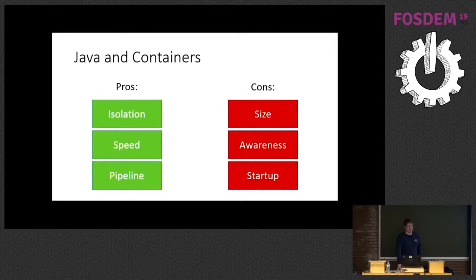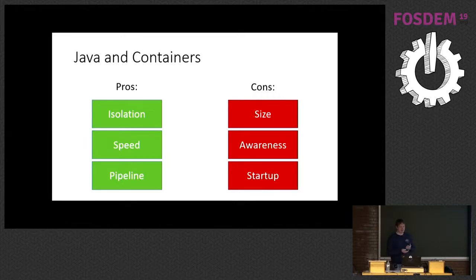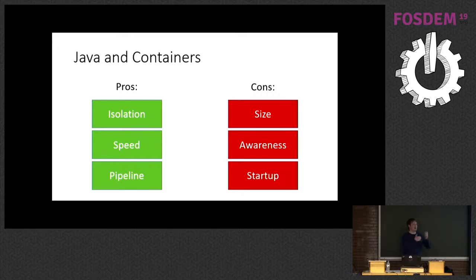When you put Java and containers together, why would you want to do this? First of all, isolation — the ability to spin up lots of different Java processes on the same machine without worrying that they're going to interfere with each other. Speed — the ability to spin up and destroy predefined environments rapidly. And the pipeline: you can combine isolation and speed to create a string of different VMs — one environment for development, one for building, one for testing, one for prototyping and deployment.